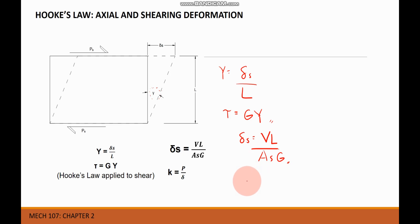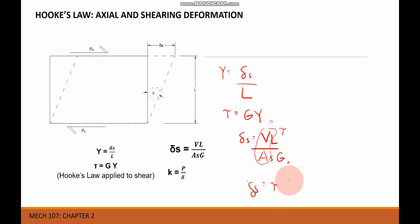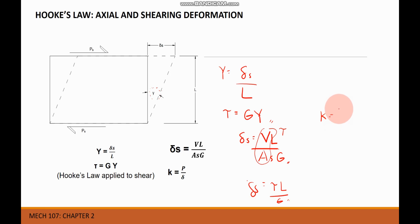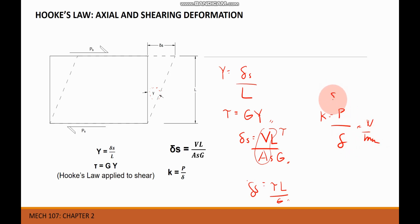The shear deformation can also be written as shear force times length over G. We also have stiffness K, which equals the load applied divided by the deformation. Stiffness is the ratio of the steady force acting on an elastic body to the resulting displacement, with units of newton per meter.